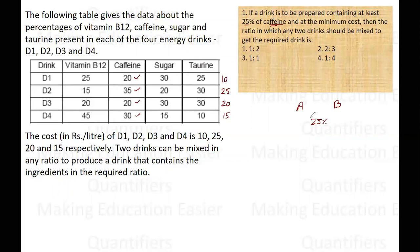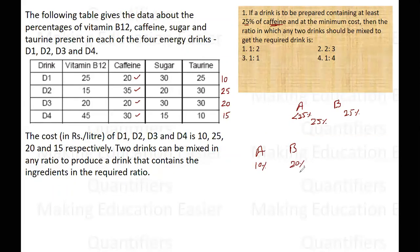By the rule of allegation, in one drink the caffeine should be less than 25% and in the other it should be more than 25%. This is the rule of weighted average — when you combine two values, the net result has to lie somewhere between those two values. So combining 10% and 20% gives a result between 10 and 20, not 25%.